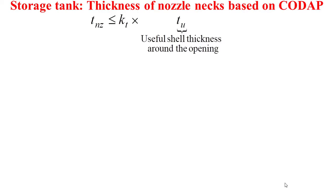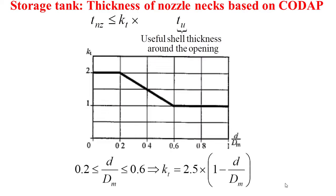For the thickness of the nozzle neck, the CODAP formula indicates that the nozzle neck thickness should not exceed the maximum value of a factor KT multiplied by the useful thickness of the shell around the opening. The factor KT is obtained using a chart: when the diameter of the opening d divided by the mean shell diameter dm is lower than 0.2, KT equals 2; when d/dm is higher than 0.6, KT equals 1; and from 0.2 to 0.6, KT is obtained using the formula shown.